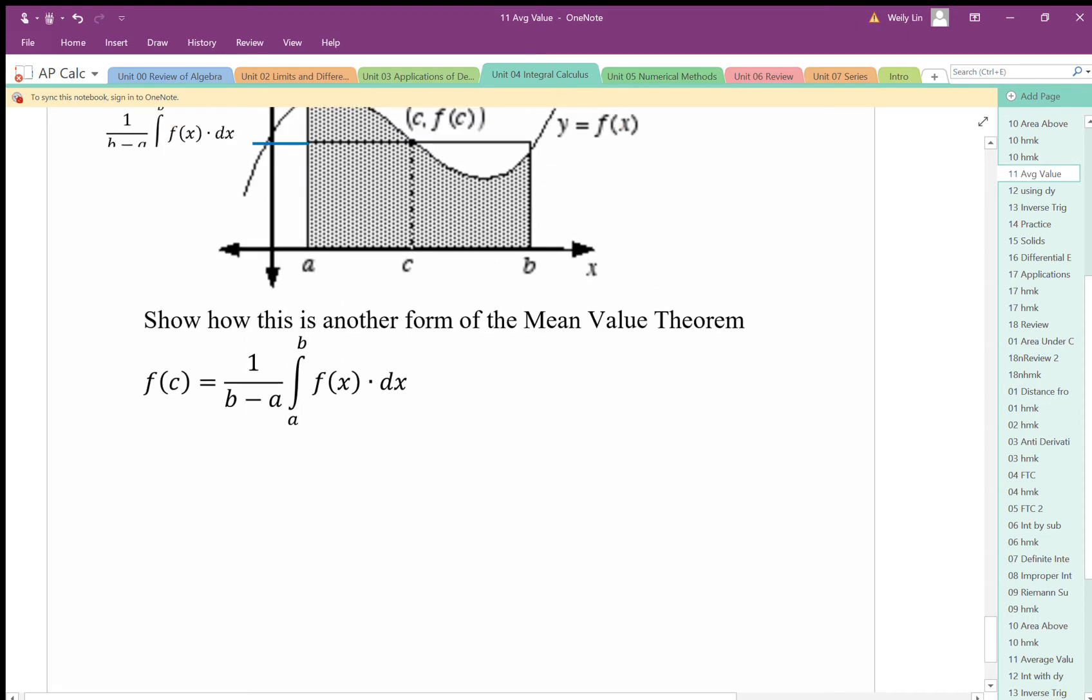The mean value theorem said this: the derivative at c is equal to the average slope between b and a.